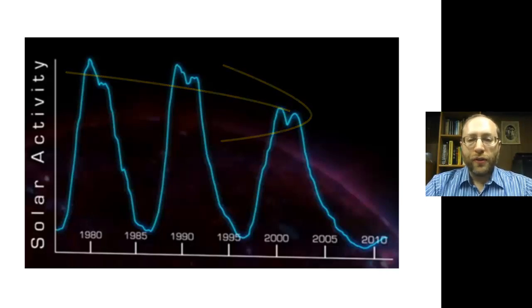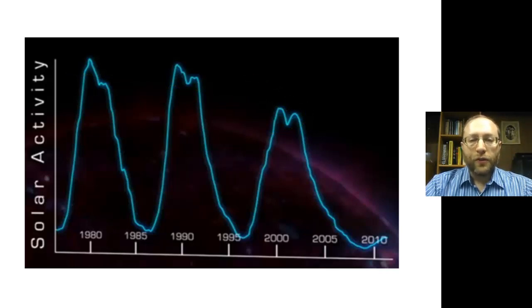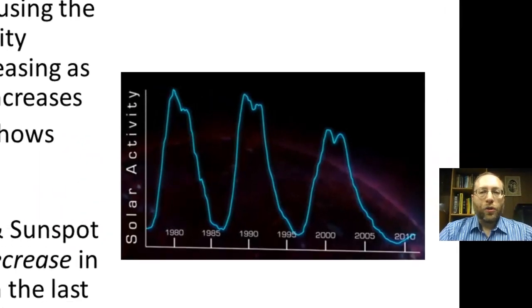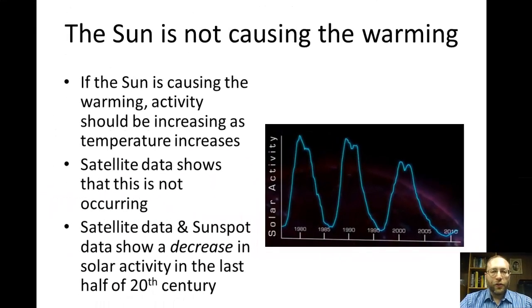This graph shows solar activity going in cycles of 11 years. Since 1979, each solar maximum has been decreasing over time. If solar activity were causing the warming, we should see the reverse — solar activity should be increasing. Additionally, if solar activity were the cause, the entire atmosphere should be warming. In fact, only the troposphere is warming; the stratosphere has been cooling over this time. So solar activity cannot be the cause of global warming.